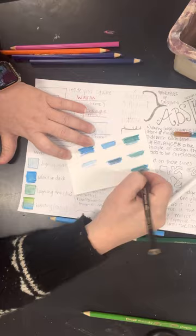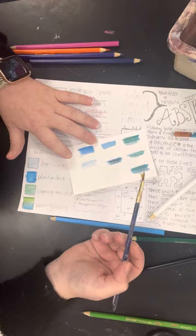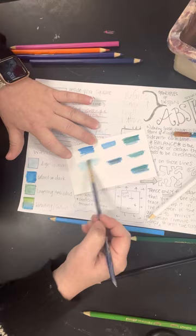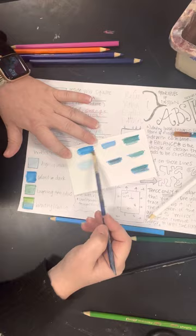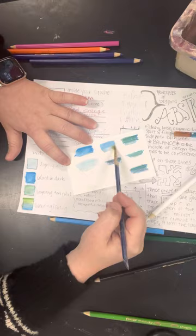All right, so with watercolor, and this goes with pan watercolors or watercolor pencils, the more water you put onto it, the more translucent it's going to be. So if you have a lot of water that you're spreading around, then you're going to dilute that color. What I like to do is just kind of, once I get my brush wet, wipe it off on the side so it's not dripping wet.